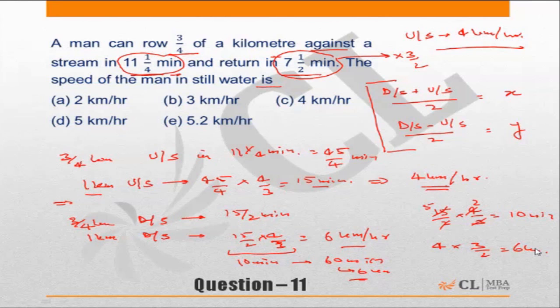After that I don't think it should be an issue. Speed of man in still water would be downstream speed plus upstream speed by 2, which equals 5. Choice E is the correct answer.